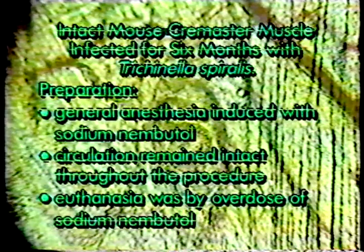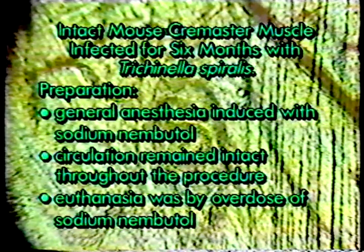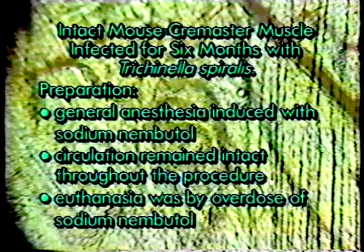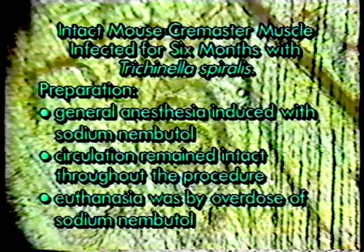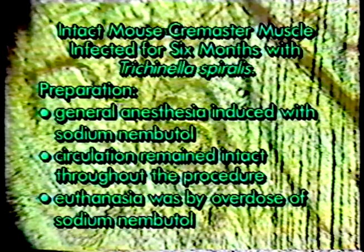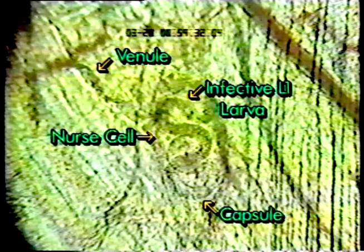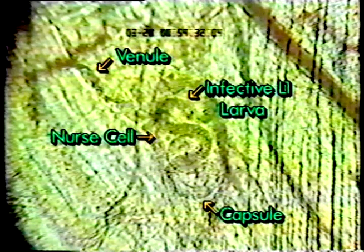The living intact nurse cell parasite complex can be conveniently viewed in the cremaster muscle of an infected mouse at several magnifications by preparing the entire infected animal for intravital microscopy. Nemutol was used as the anesthetic, and the mouse was killed at the end of the experiment by an overdose of the same drug. The diagram shows the relationship of the nurse cell parasite complex to the rest of the muscle tissue. This freeze frame shows an intact nurse cell parasite complex in the cremaster muscle of an infected mouse.